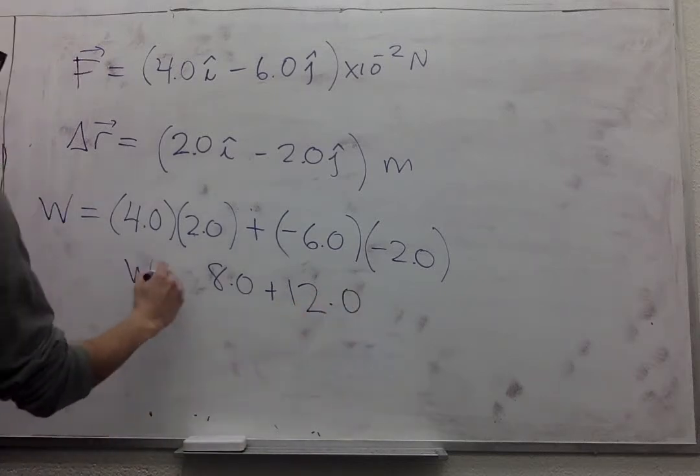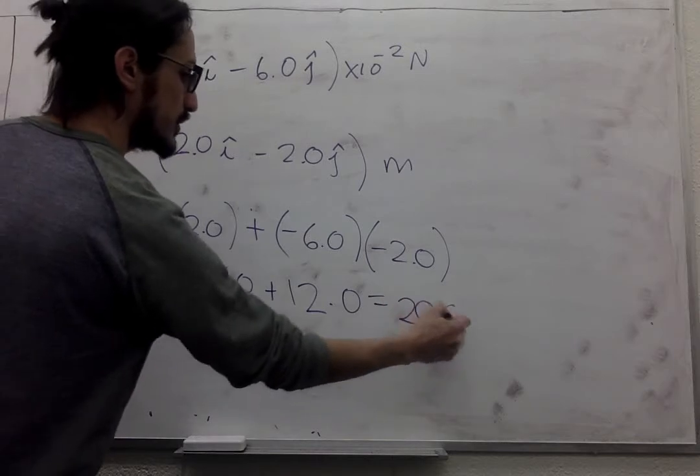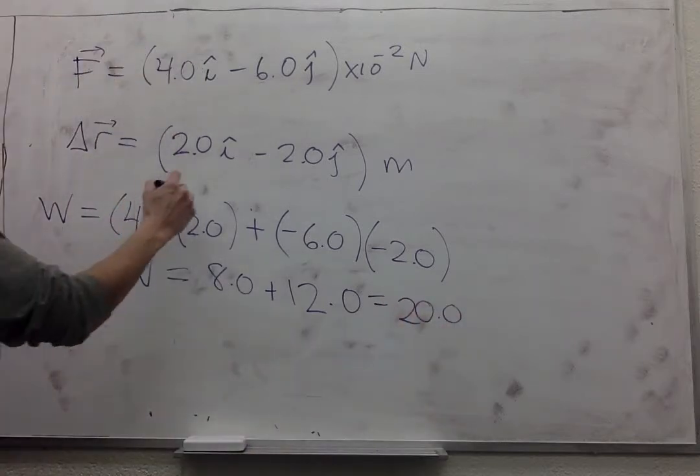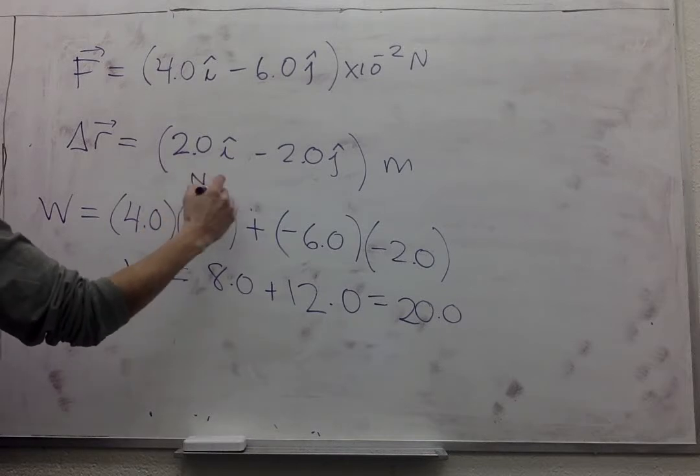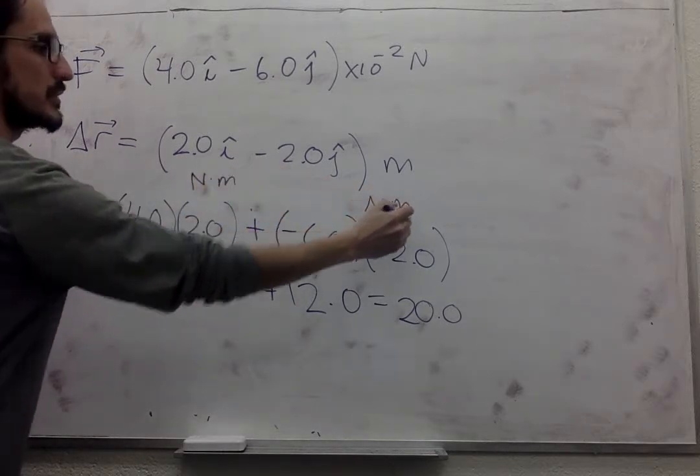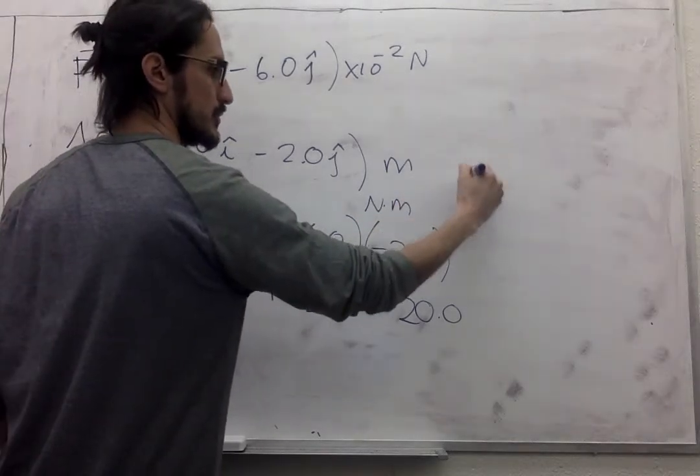So the work is 20.0 and what are the units? Newton times meter, Newton times meter, so that's equal to joules.